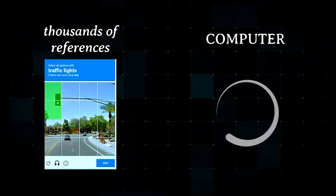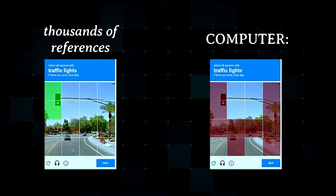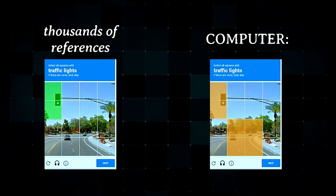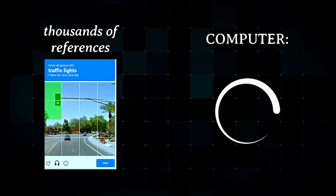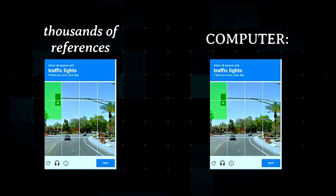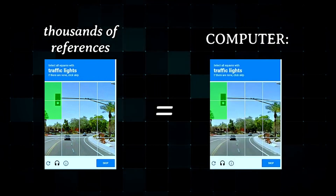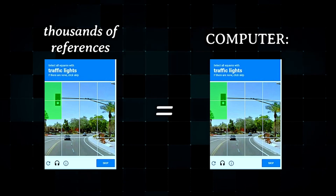That's where your CAPTCHA test comes in. Knowing these sensitivities, the computer uses the images you classified as references and efficiently tweaks the function until its final response matches your classifications.